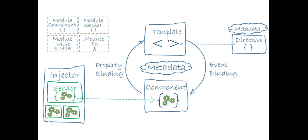If we want something from the template to get triggered in the component, we use event binding — such as onClick. These events, like onClick, will get fired in the component and it will run the logic. We also have metadata to provide extra information about the component.